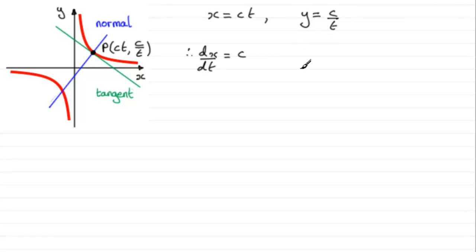For dy by dt, we can think of this as being equal to c times t to the power minus 1. So when we differentiate this, we get minus ct to the power minus 2. In other words, minus c over t squared.